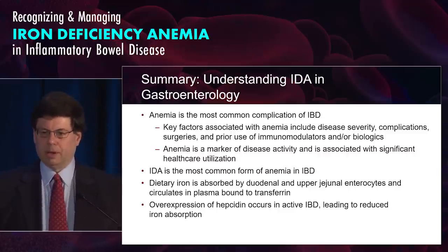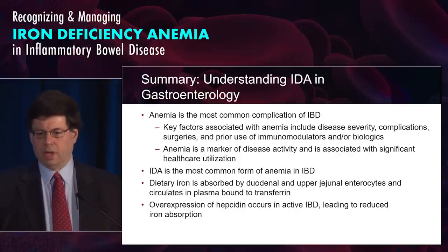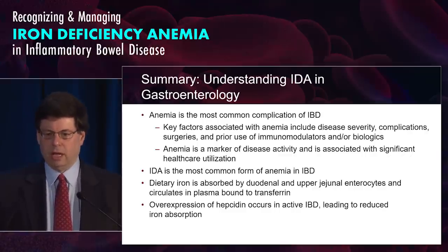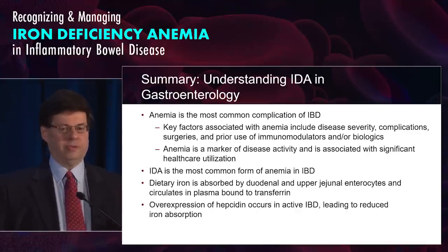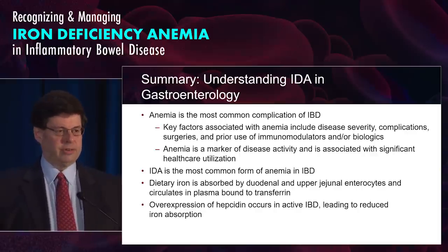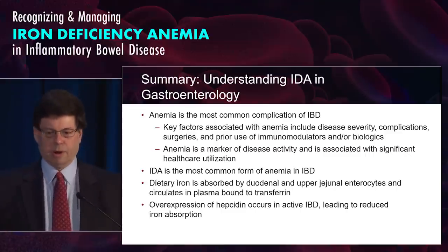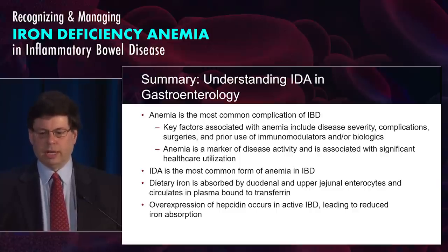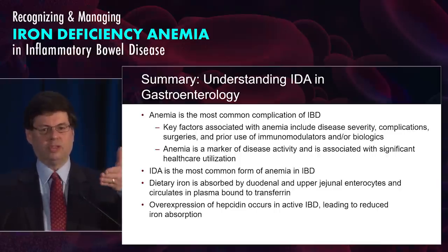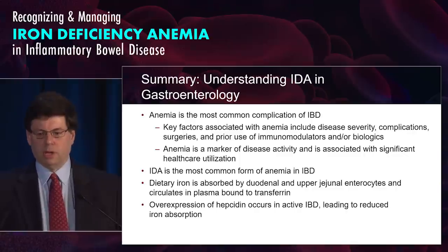To summarize: anemia is the most common complication of IBD. Key factors associated with anemia are disease severity, complications, surgery, and prior biologic and immune modulator use — again, markers of more severe disease. Anemia itself is a marker of disease activity and is associated with significant healthcare utilization. The most common form of anemia in IBD is iron deficiency, and globally it's estimated that about 30% of all people in the world, based on WHO standards, have iron deficiency anemia. Iron absorption in the duodenum and upper jejunum occurs through the enterocyte, circulates in plasma bound to transferrin, and goes throughout the body. Overexpression of hepcidin in active IBD leads to reduced iron absorption.